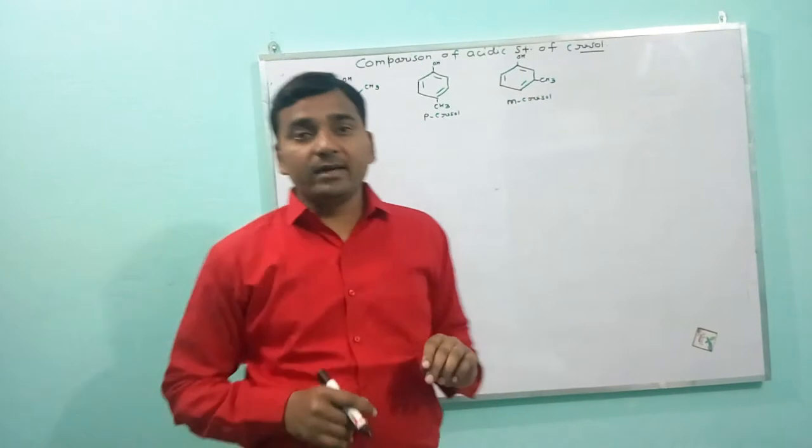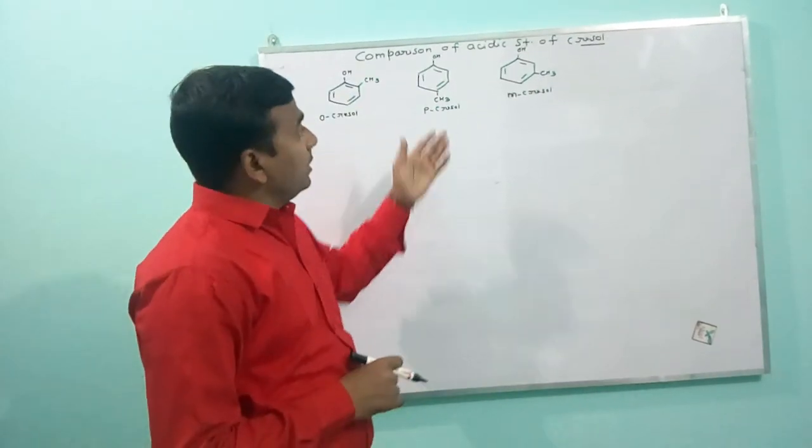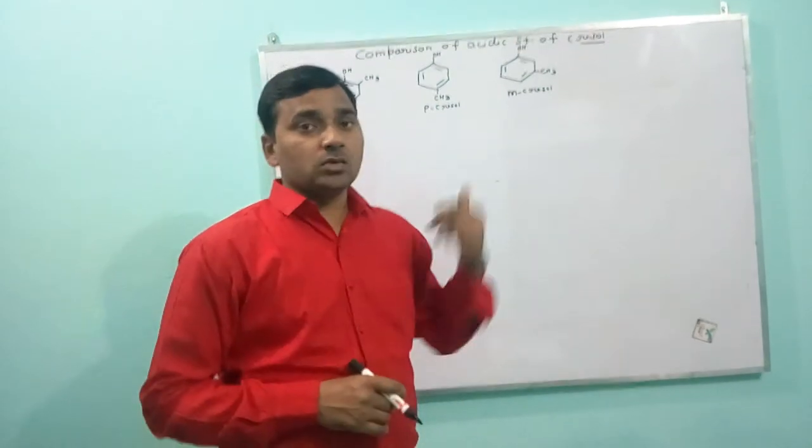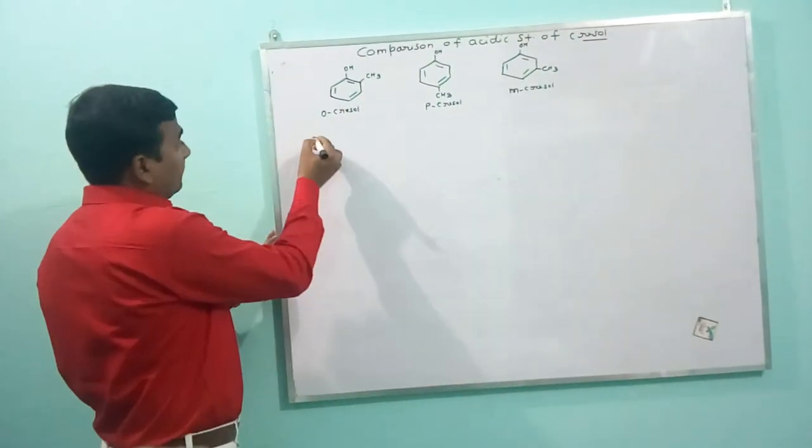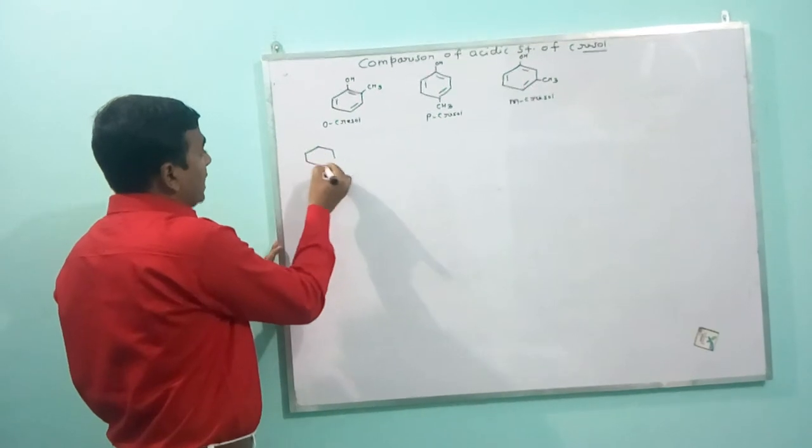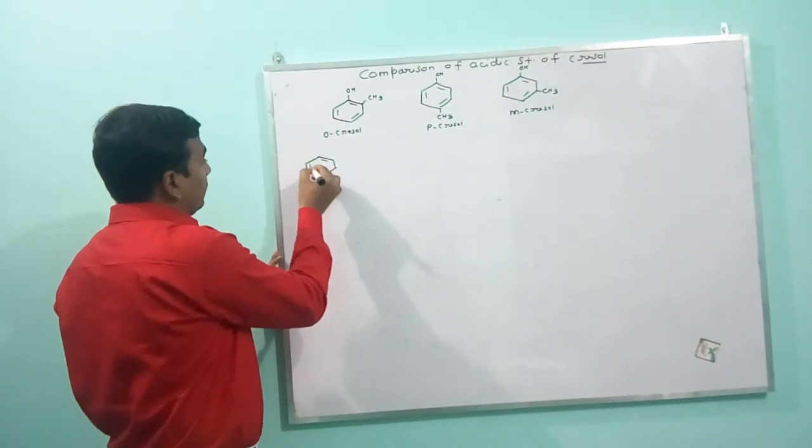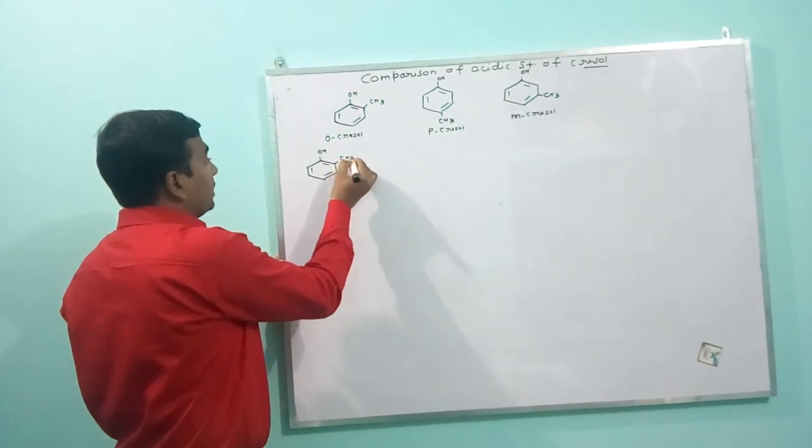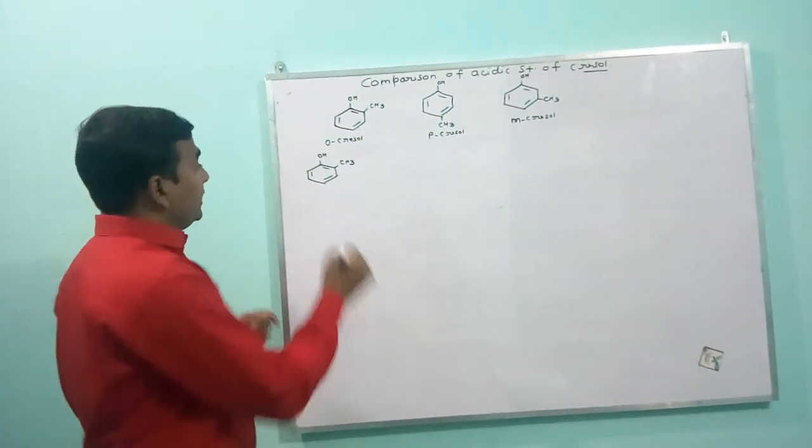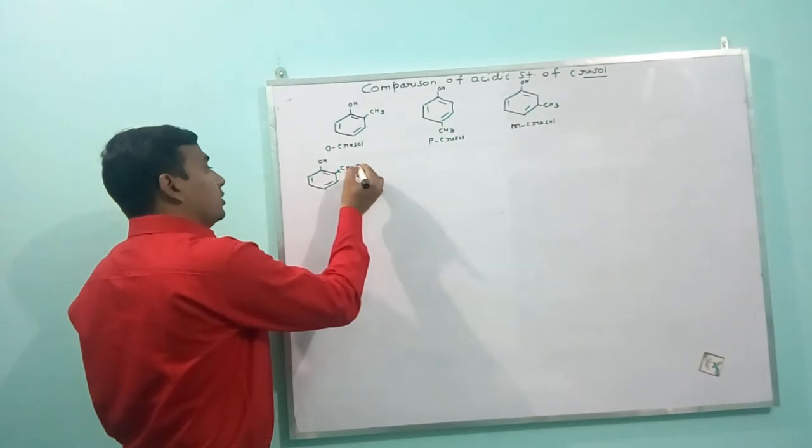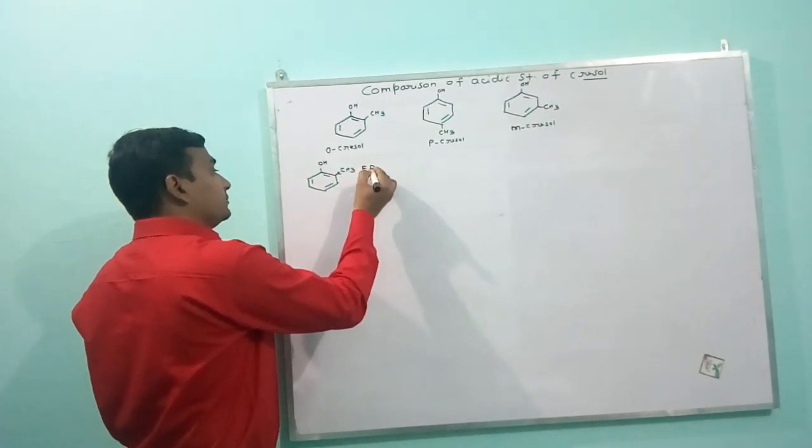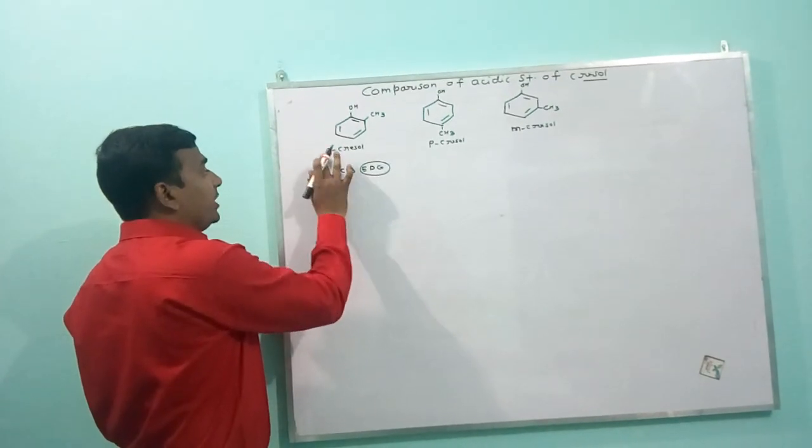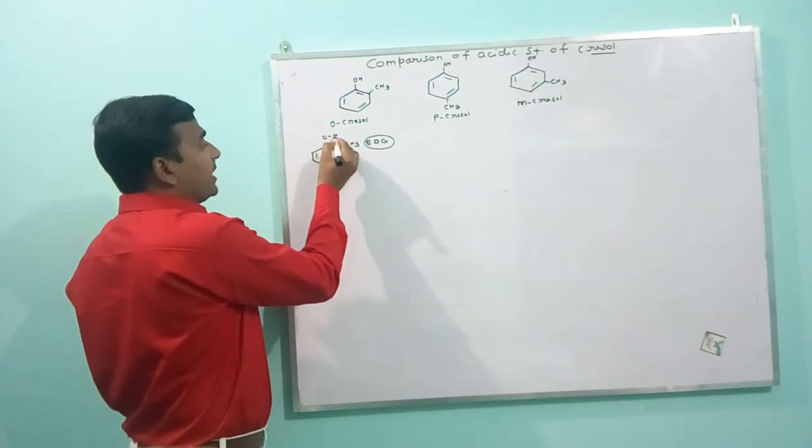First of all, I will discuss the acidic strength of phenol and Cresol. Cresols have an electron donating group, just like in Ortho Cresol. This electron donating group increases the electron density between O and H. So,